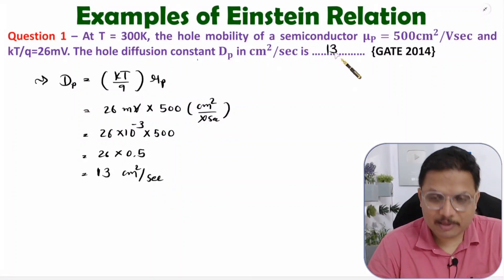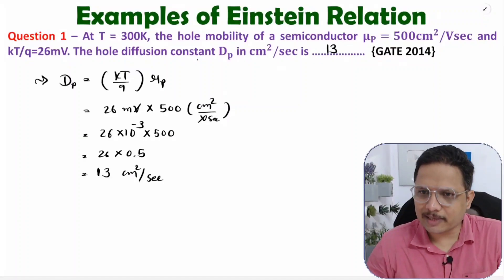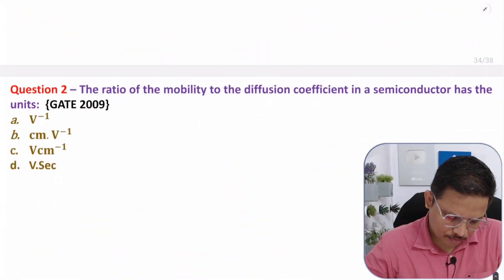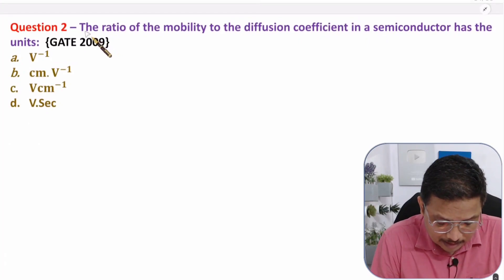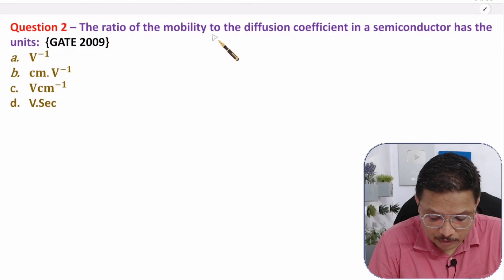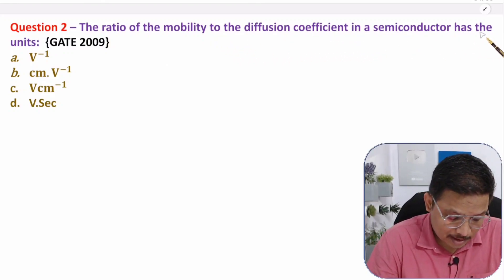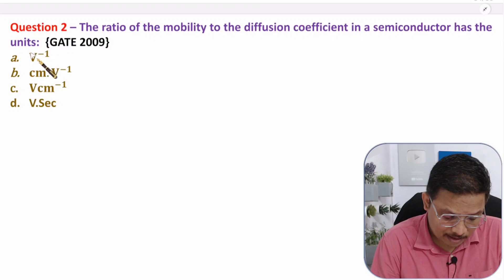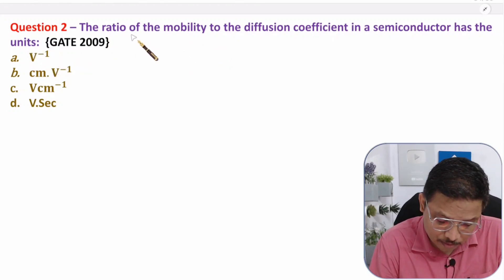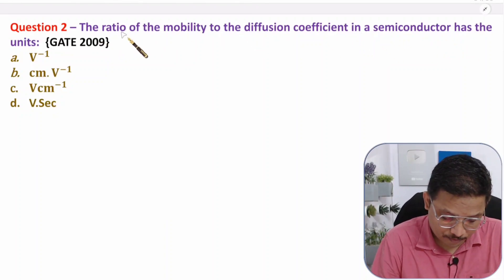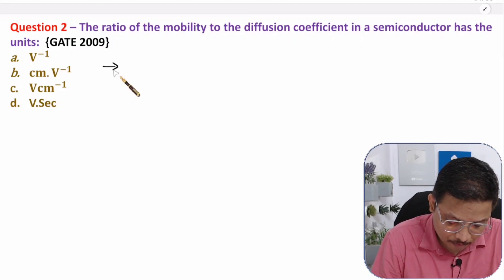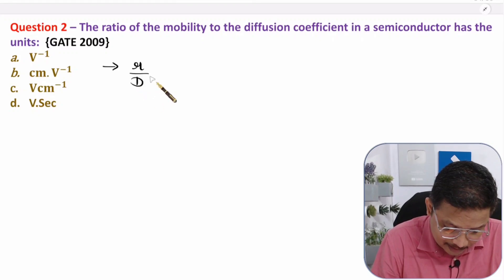This is how simply we can solve this type of question. Let's look at the second question. The second question is: the ratio of the mobility to the diffusion coefficient in a semiconductor has the units - so we need to find the ratio of mobility to diffusion coefficient and determine the units of that ratio.